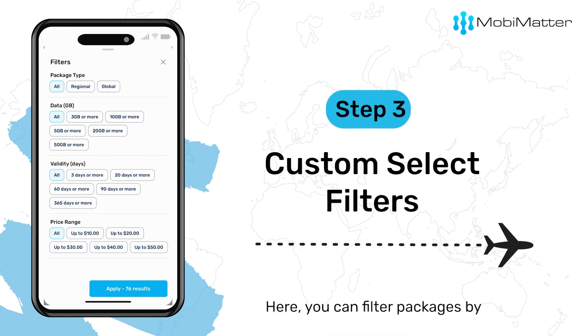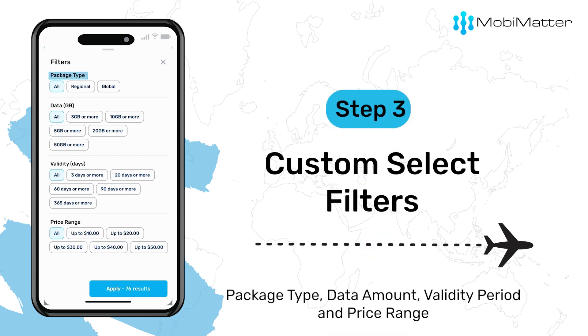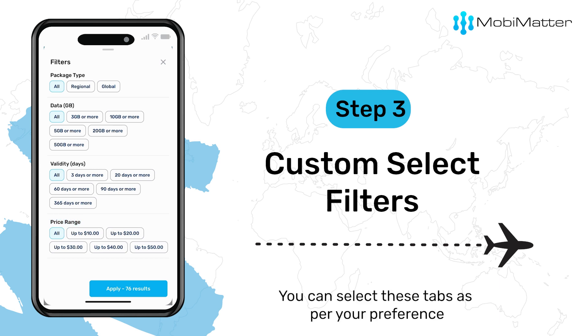Here you can filter packages by package type, data amount, validity period, and price range. You can select these tabs as per your preference.